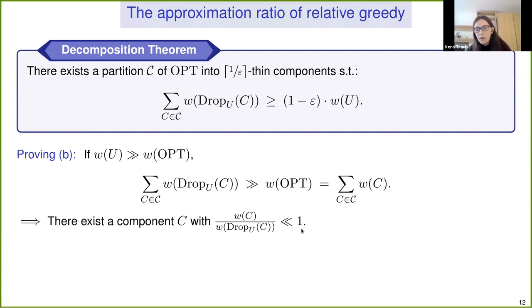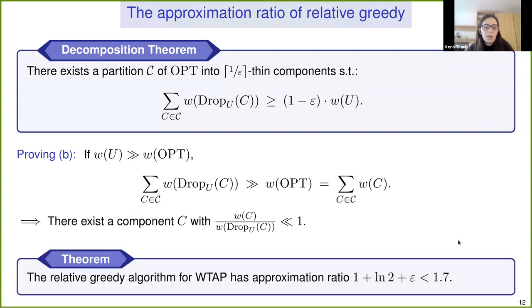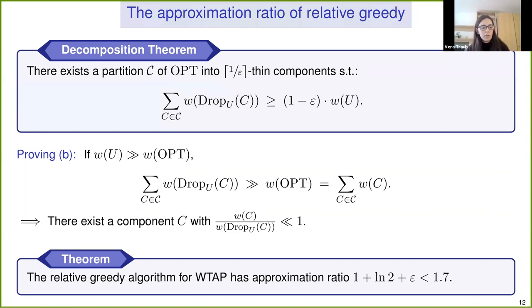By quantifying the progress made, one can show this relative greedy algorithm achieves an approximation ratio of slightly less than 1.7.